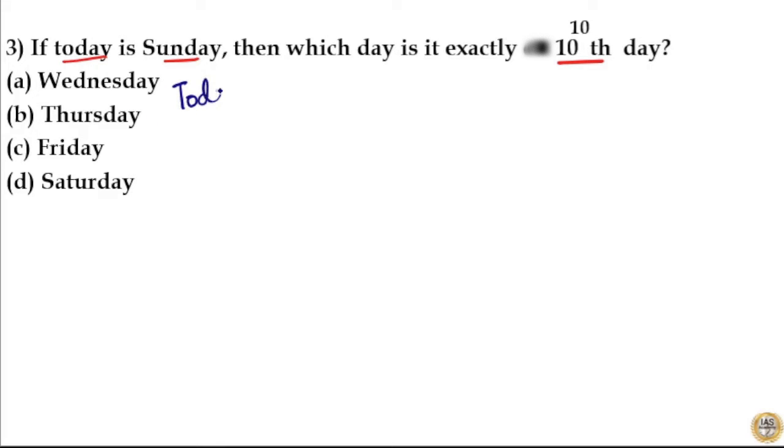If today is Sunday, that means 7th day will be Sunday, 14th day will be Sunday, again 21st day will be Sunday.